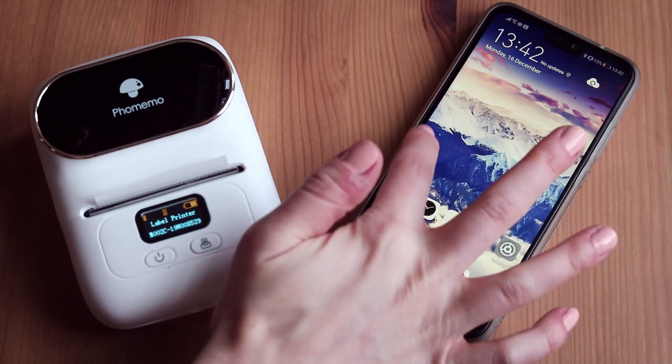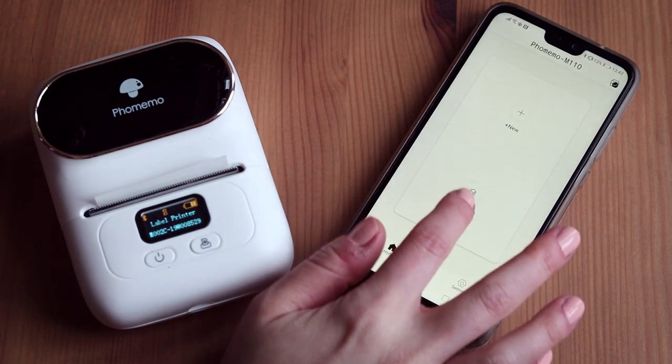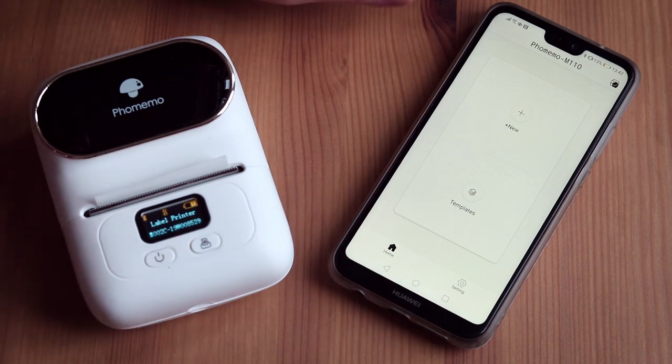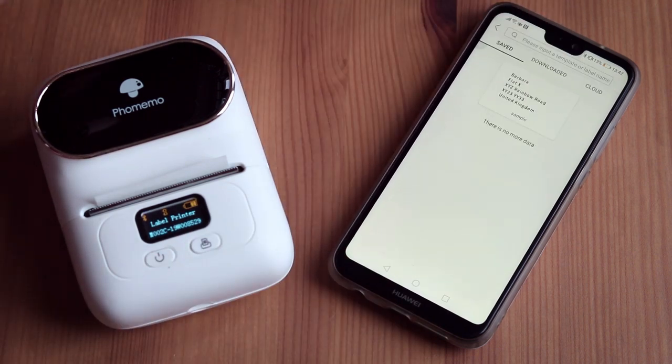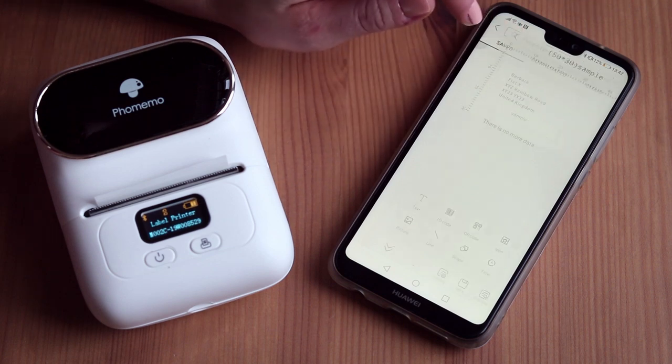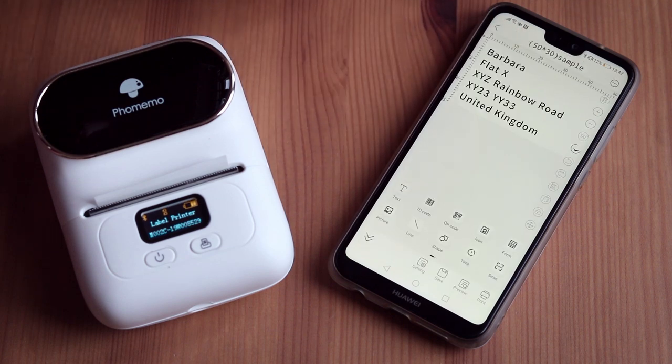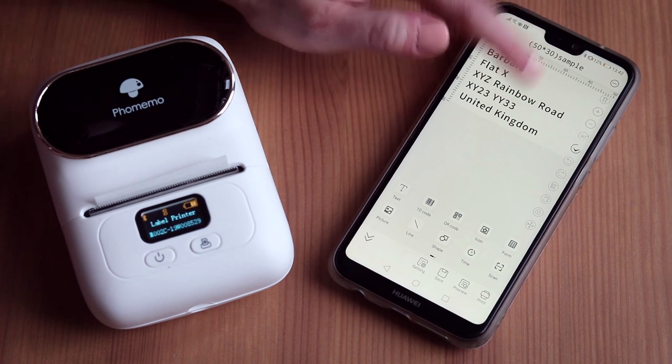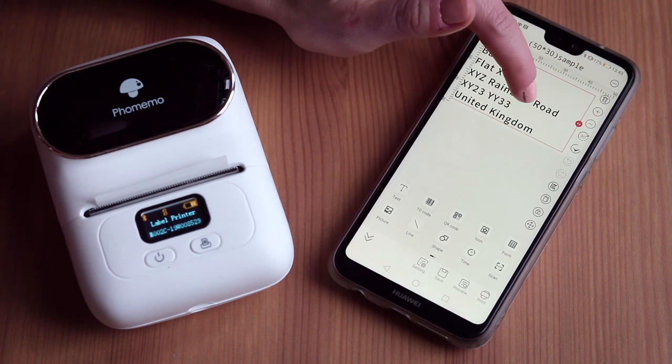You create the labels in the Fomemo app. I usually have mine saved so I can access them quickly. You can edit the text in the editor, see the preview, and then print it out. You can adjust the size accordingly to the label size you're using at the moment because there are several sizes you can choose from.